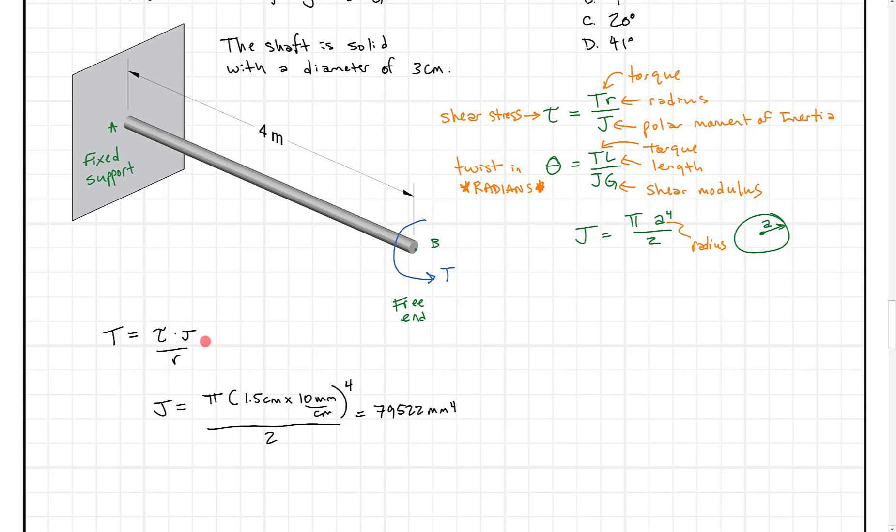So when we solve for J we get a big number of 79,522 millimeters to the fourth. Okay so that's J but now what that allows us to do is to substitute in. So we're going to put in 80 megapascals that was the allowable torsional shear stress that we were given times J which is this big number here 795.22 millimeters to the fourth divided by R.